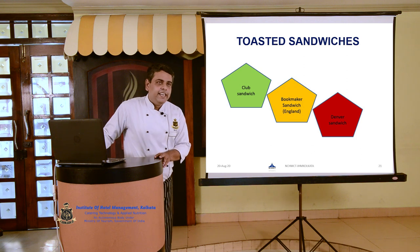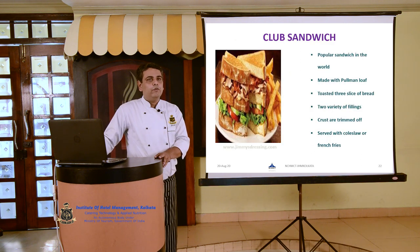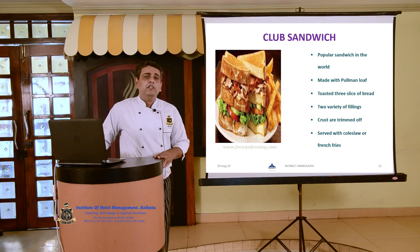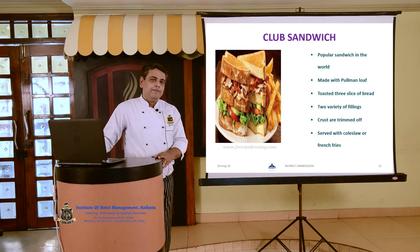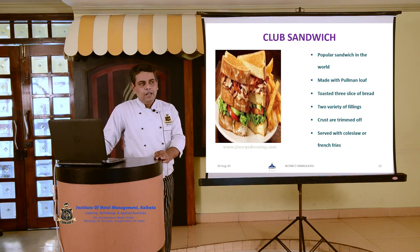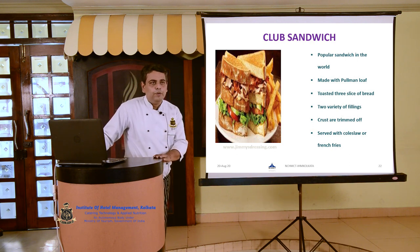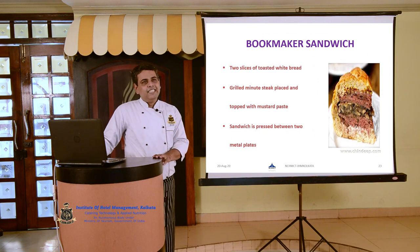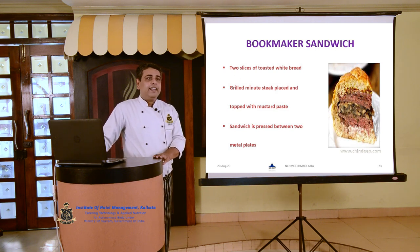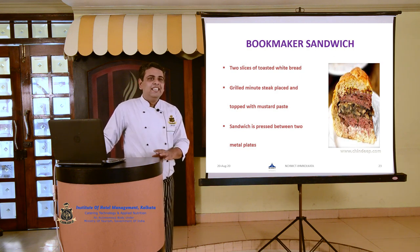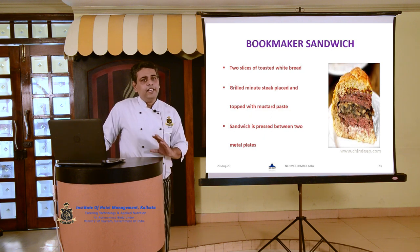Club sandwich is one of the most popular sandwiches in the world. It is made with pullman loaf — three slices of bread with two varieties of filling. When served to the guest, the crust needs to be removed. It is always served with coleslaw or French fries. The beauty of this sandwich is that one variety of filling is supposed to be veg and one is supposed to be non-veg. The next is bookmaker sandwich, where two slices of toasted white bread are filled with a grilled minute steak topped with mustard paste, and the sandwiches are pressed between two metal plates so the steak remains juicy.